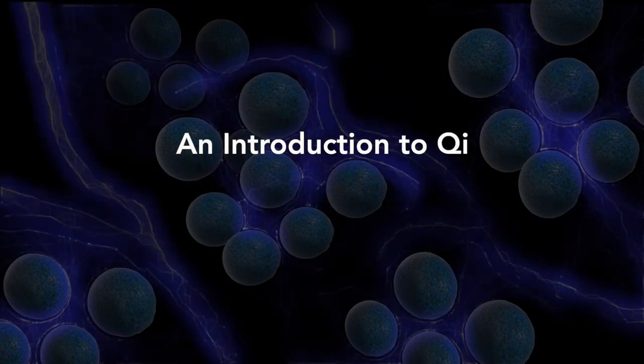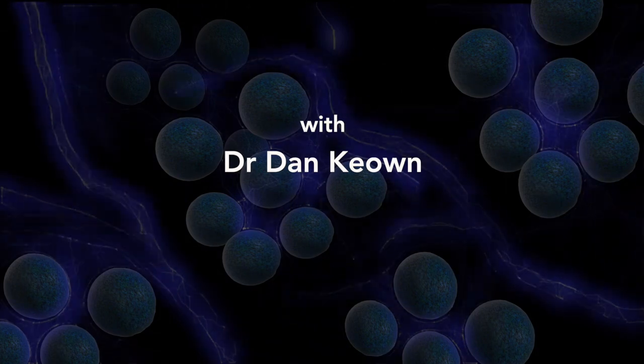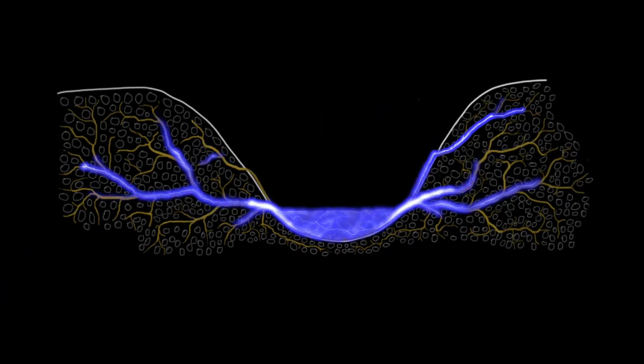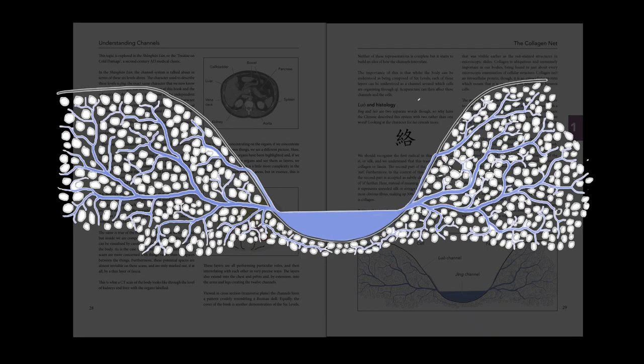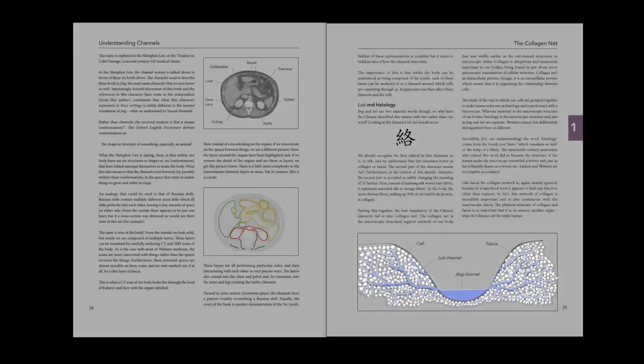An introduction to Qi. Qi can be understood as simply the energy that binds all our cells together. This energy is, in practice, mainly invisible unless it is specifically looked for.